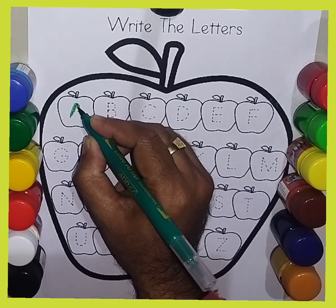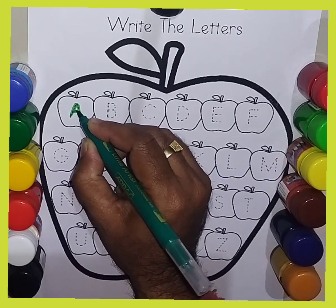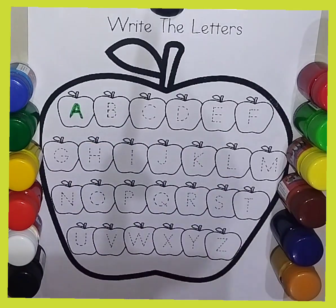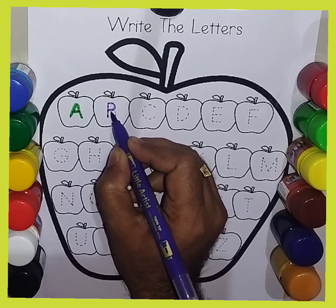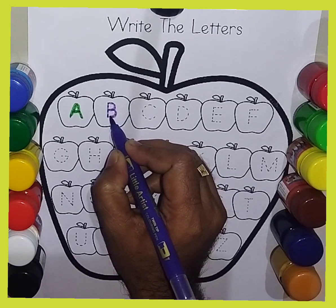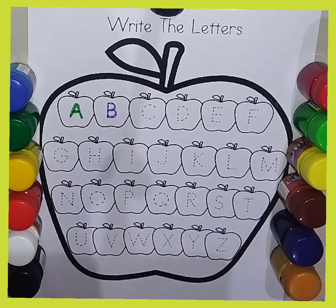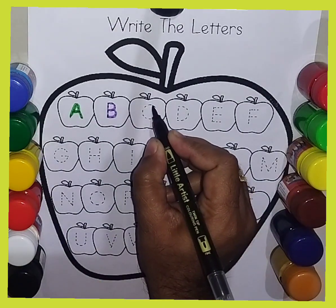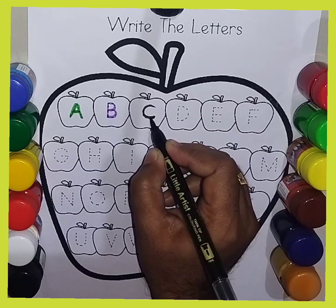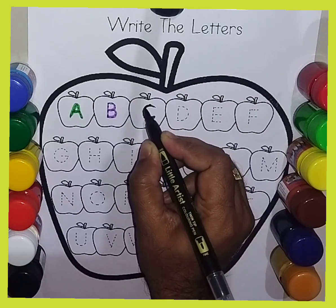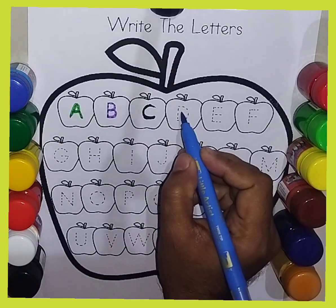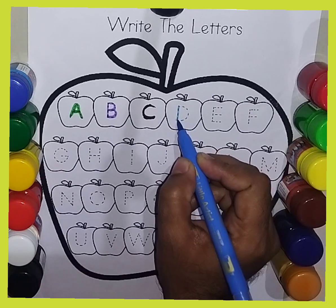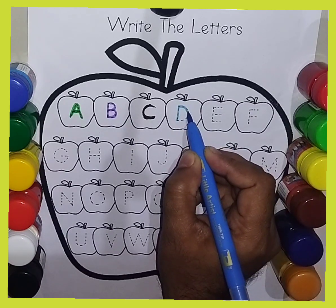A, A, A for aeroplane. B, B, B for ball. C, C, C for camel. D, D, D for donkey.